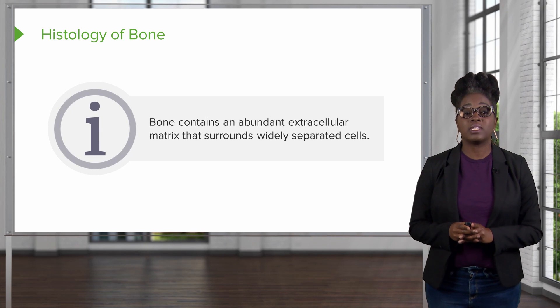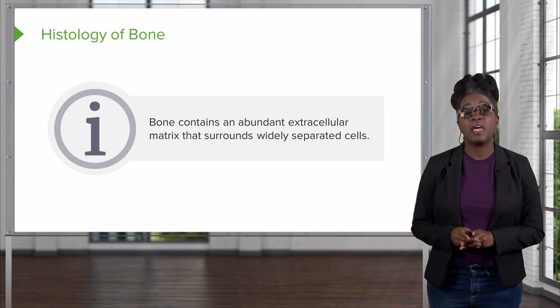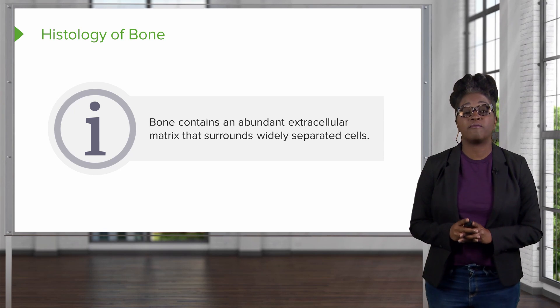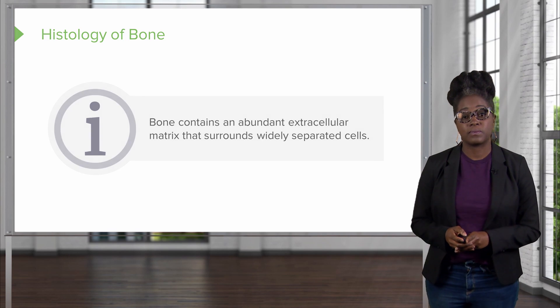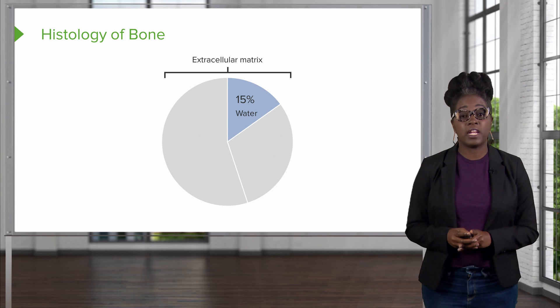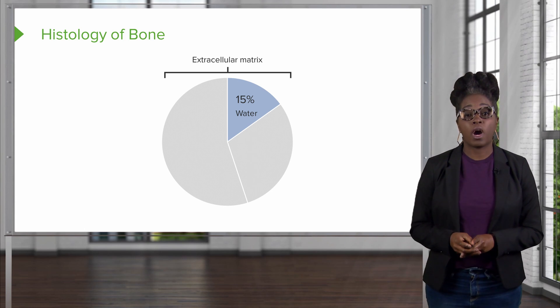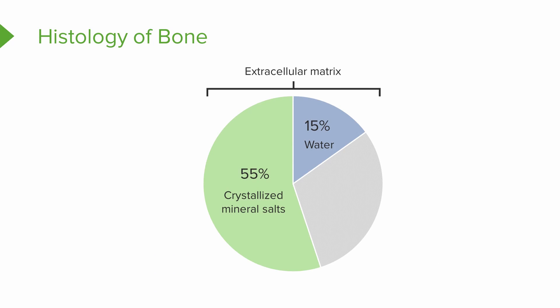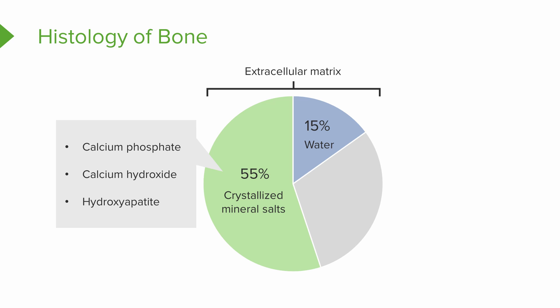The bone is going to contain an abundant extracellular matrix that is going to surround different types of cells that are very widely separated. The bone is mostly made up of three major components: water, a large amount of crystallized minerals — including calcium phosphate, calcium hydroxide, and hydroxyapatite — and finally, collagen. The importance of collagen is that calcification, or the hardening of the bone, requires the presence of collagen fibers in order to occur.